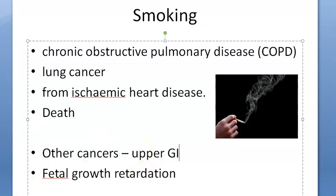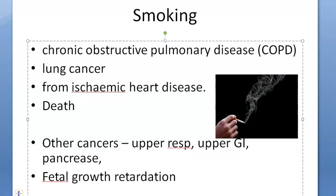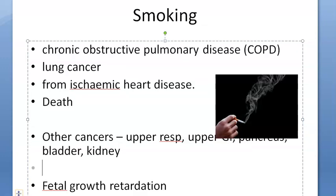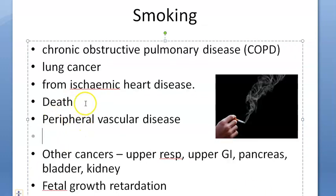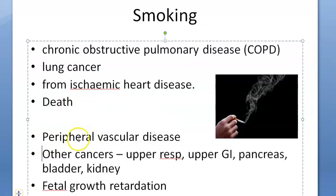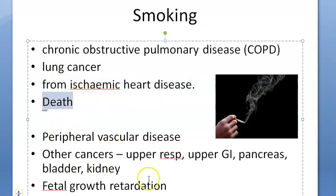Smoking can cause cancers of the upper GI tract, upper respiratory tract, pancreas, bladder, and kidney. It can also cause peripheral vascular disease — which you would have seen commonly in surgery — and ischemic heart disease.